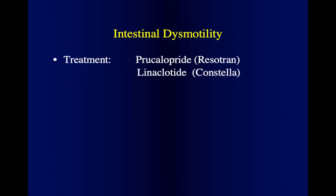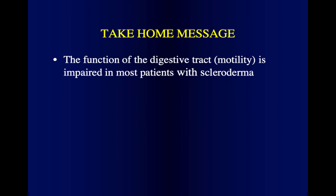For intestinal dysmotility with constipation — quite common in scleroderma patients — we can use prucalopride (Resotran) to increase motility, or a newer medication called Constella. Constella works on the lining of the gut and makes cells secrete water into the lumen, essentially flushing it from the inside.